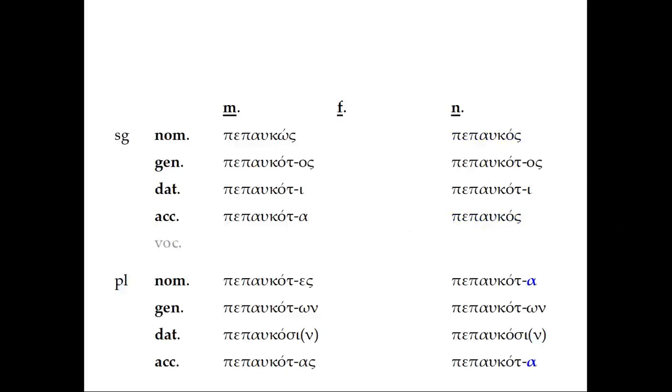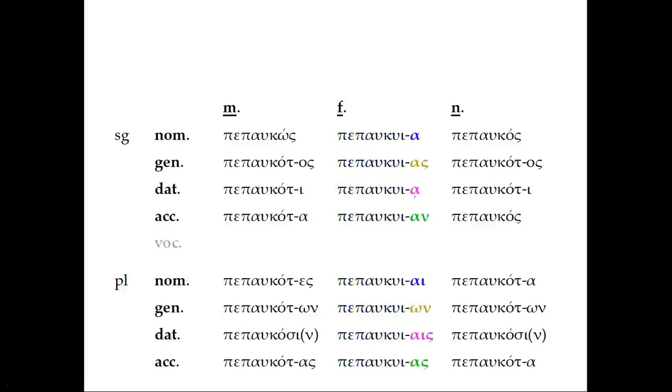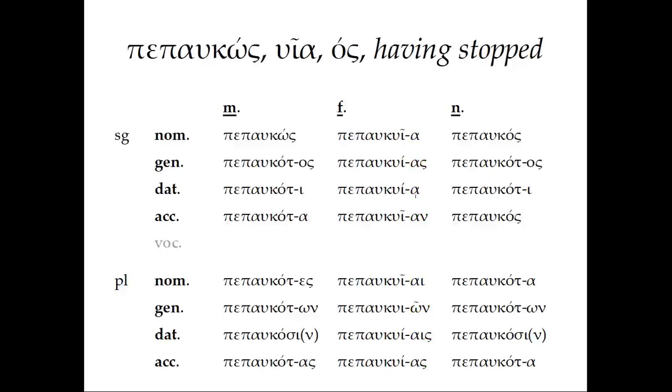For the feminine, we have a slightly different stem. Actually, it's very similar, but a little different. πεπαυκυῖα. And we're going to decline this, as we saw, as a first declension noun of the feminine persuasion. And really, what that means is, after the iota here in the stem, we're not going to have the usual eta, but alphas throughout the declension. So, we've seen this declension many times before. There's nothing really all that special here. So, this is the full declension of πεπαυκώς, πεπαυκυῖα, πεπαυκός, having stopped, the perfect participle.